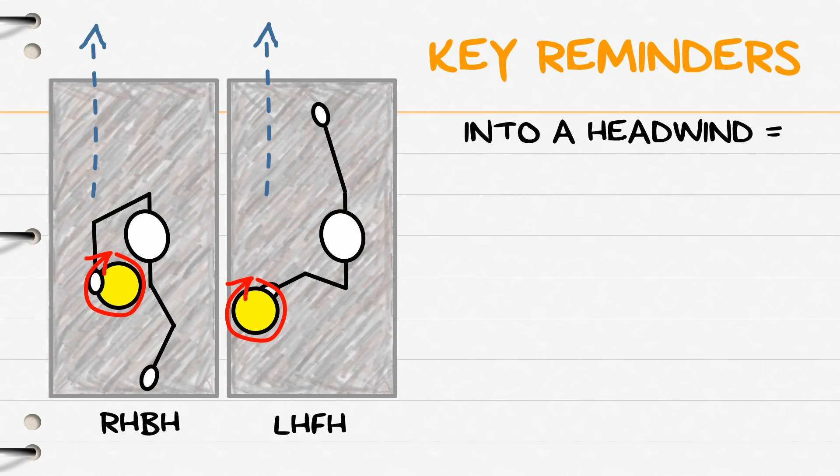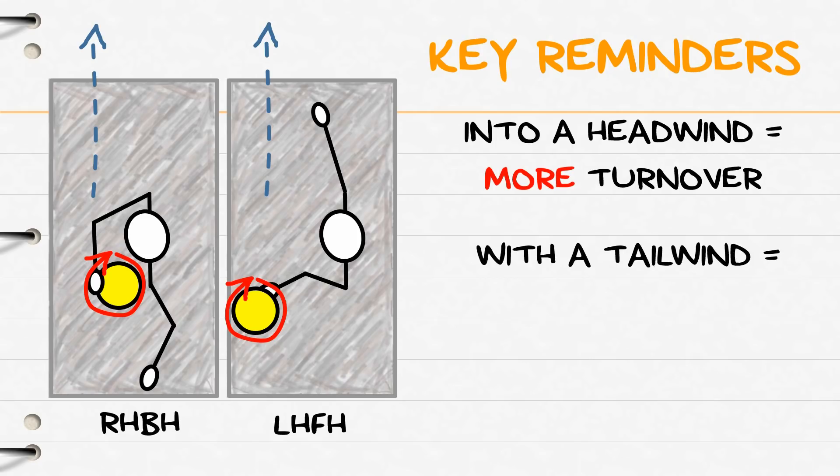For this discussion it'll be important to remember that discs thrown into a headwind will generate more turnover than they normally would and discs thrown with a supporting tailwind will generate less turnover than they normally would. So let's get started.